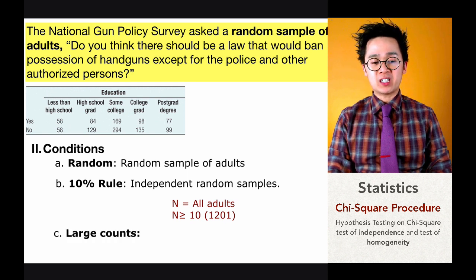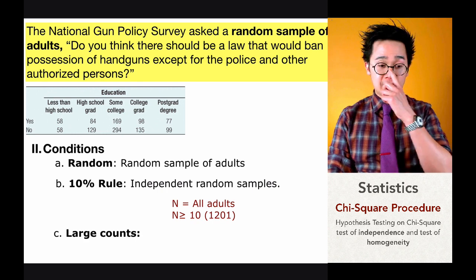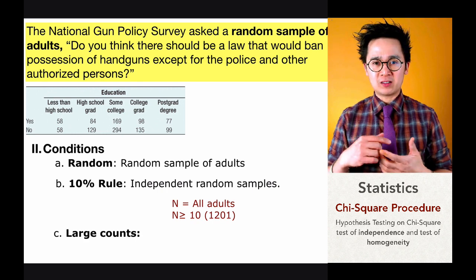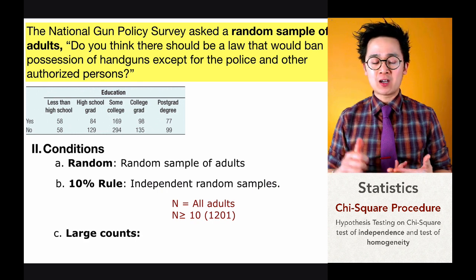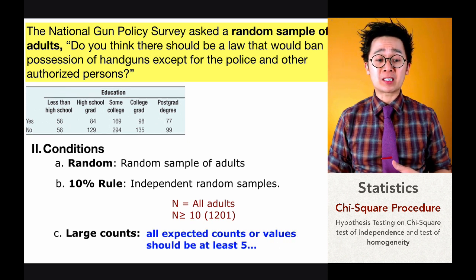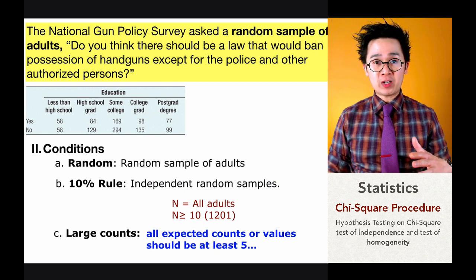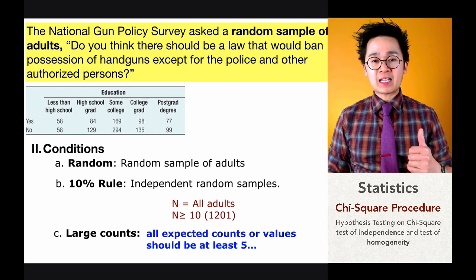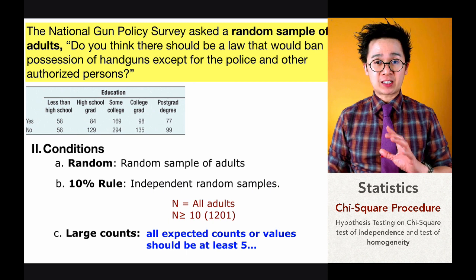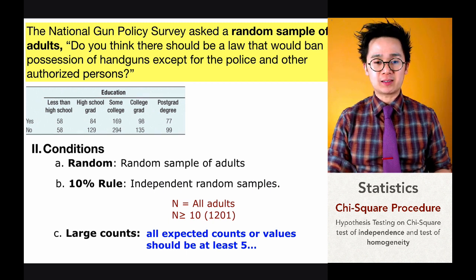For the third condition — large counts — when answering a chi-square test, whether it is goodness of fit, test for independence, or homogeneity, all expected counts must be greater than or equal to 5. We will skip the large count condition for now and proceed to the calculation, since we need the expected values both to check the condition and to compute our test statistic.